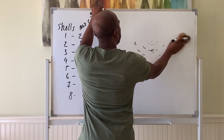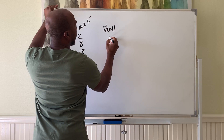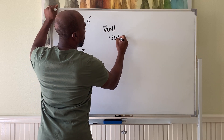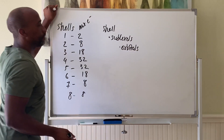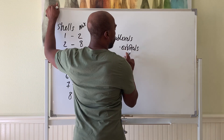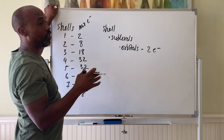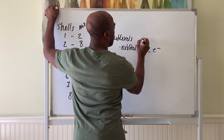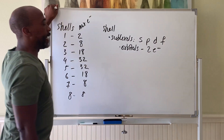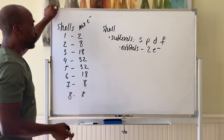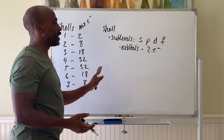Each shell has things called sublevels, and sublevels have orbitals. Each orbital can only hold two electrons. The possible sublevels are S, P, D, and F. Not all shells have all these sublevels, so we're going to put together a chart of the shells and the sublevels they contain.